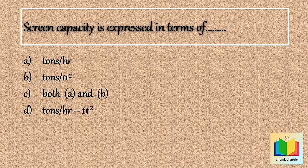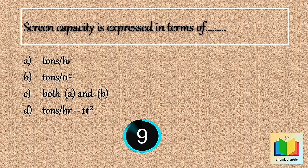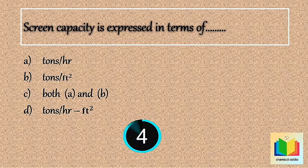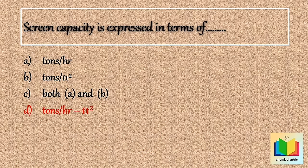Your time starts now. 10, 9, 8, 7, 6, 5, 4, 3, 2, 1. Stop. The answer is Option D: Tons per hour per feet square.